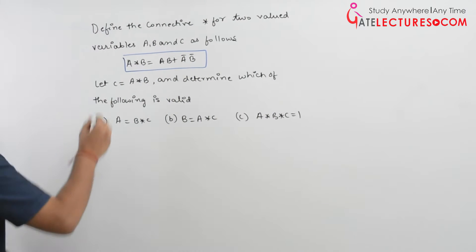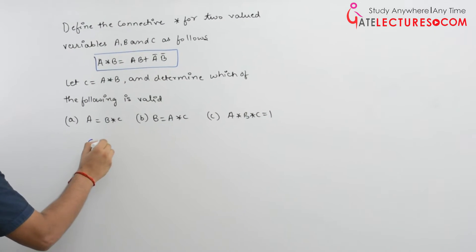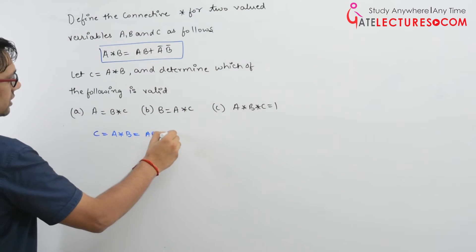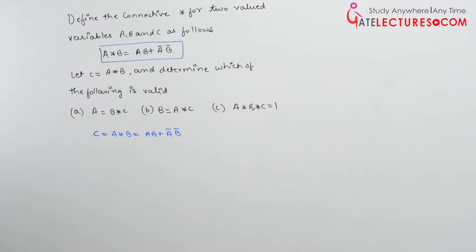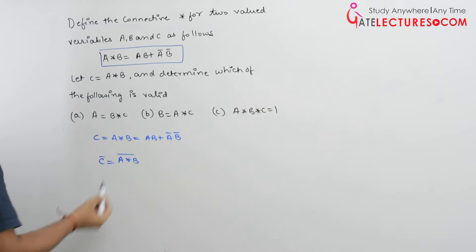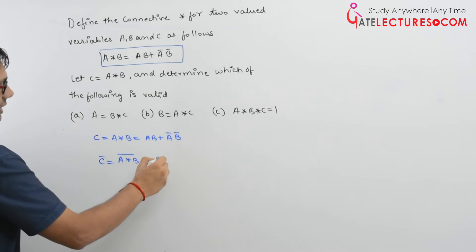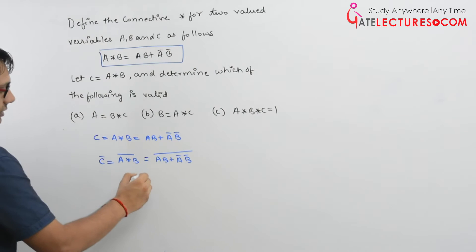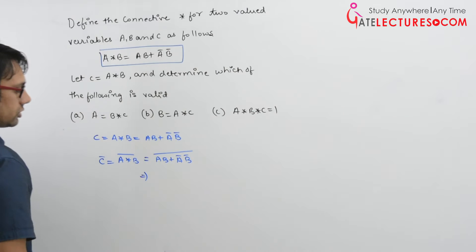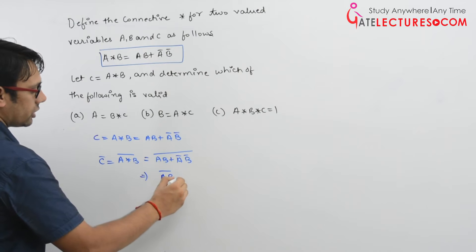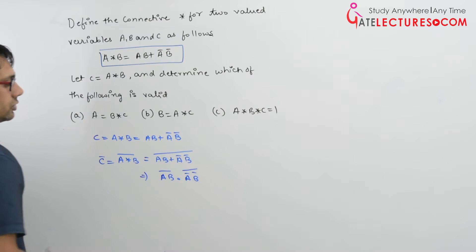First, let us establish what C and C complement are. C = A★B = AB + A'B'. Now for C complement: C' = (AB + A'B')' — applying De Morgan's law, this becomes (AB)' · (A'B')'.